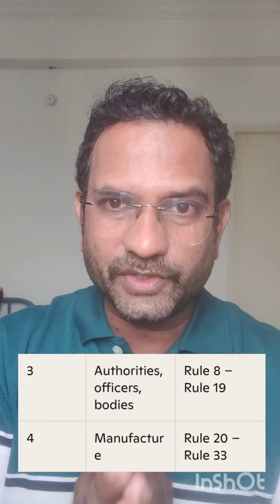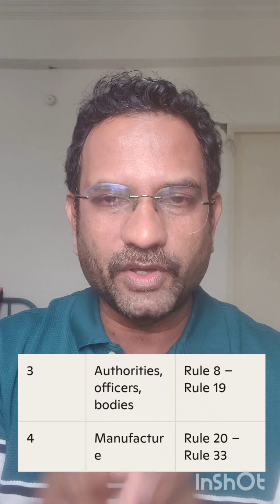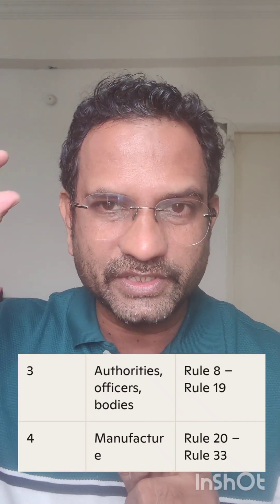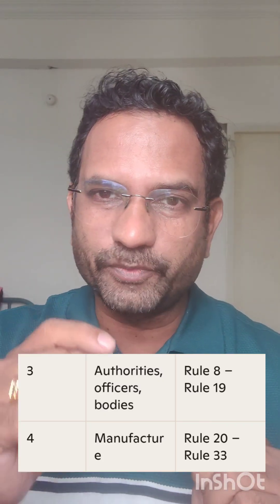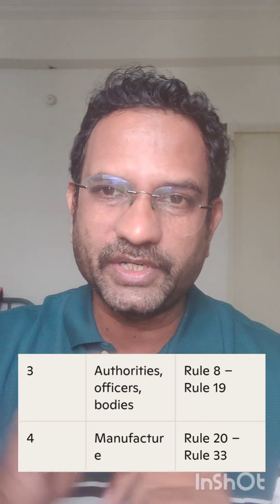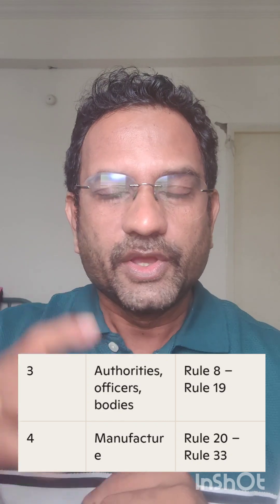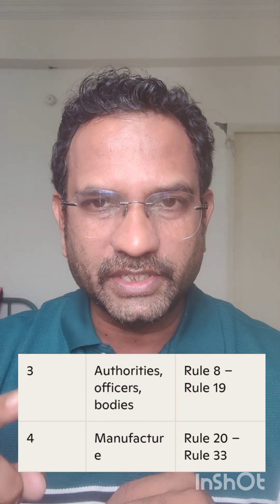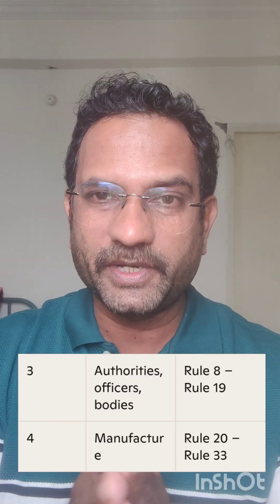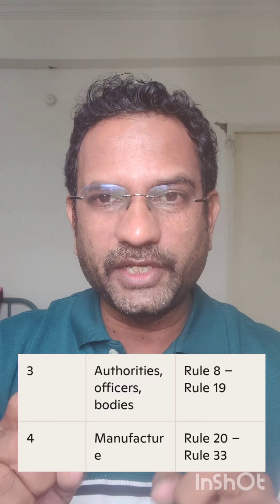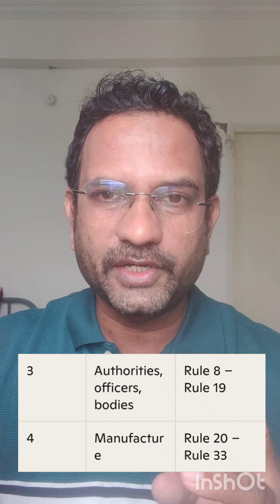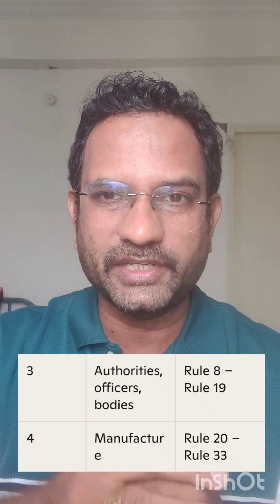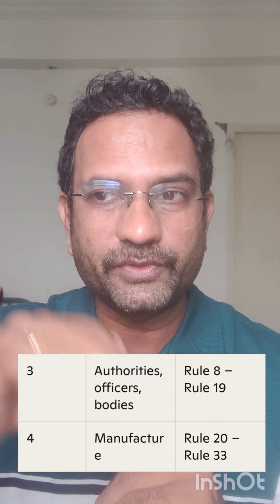Chapter 4 is related to manufacturing of medical devices for sale and distribution in India. Rules 20 to 33 are based on this chapter. All the manufacturing license forms — MD 3 to MD 10 — are related to manufacturing licenses and come under this chapter.